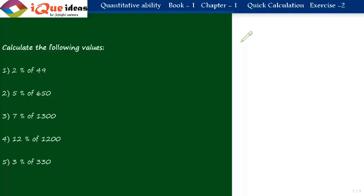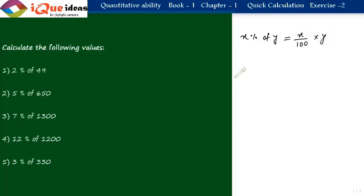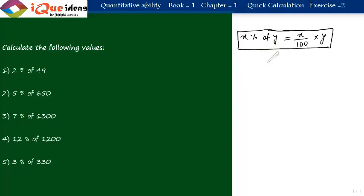We start with exercise 2 and the first set of questions. In this set, we have to calculate some percentage or some number. First, a little bit of theory. Whenever we have to calculate x percent of y, the fundamental method is x upon 100 into y, then do the required calculation. As and when necessary, we will also apply some shortcuts or memorized values.